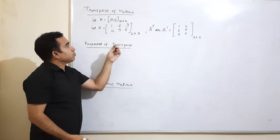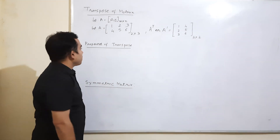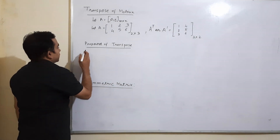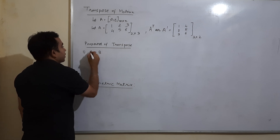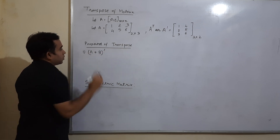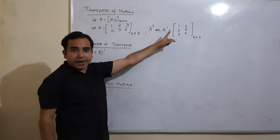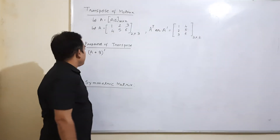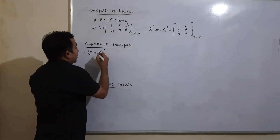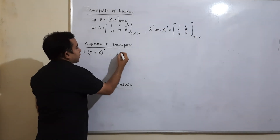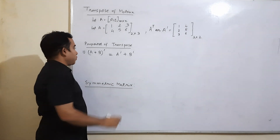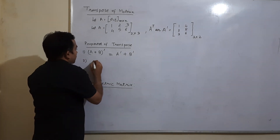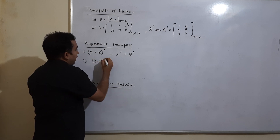Transpose means mutually interchanging rows and columns. Now there are certain properties. The first property is: (A + B)ᵀ = Aᵀ + Bᵀ. That is, the transpose of a sum is the sum of the transposes.